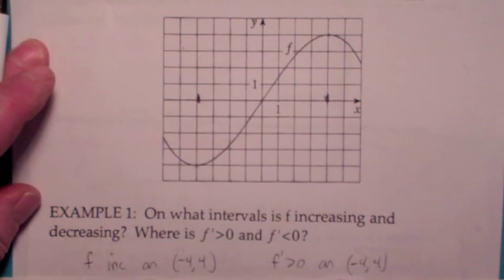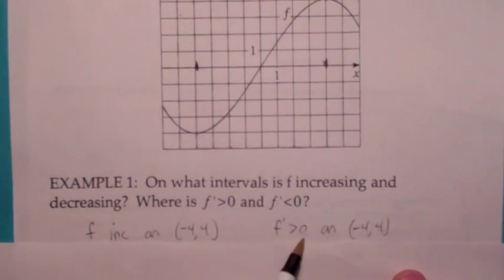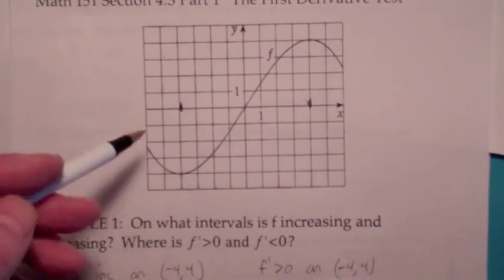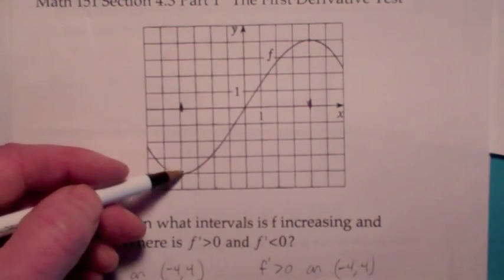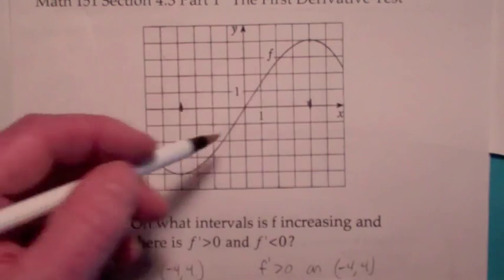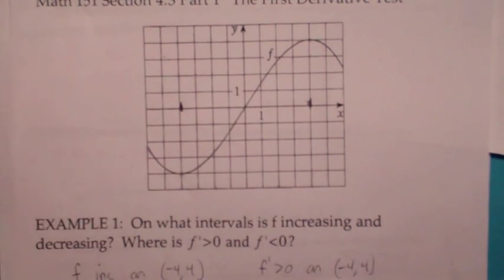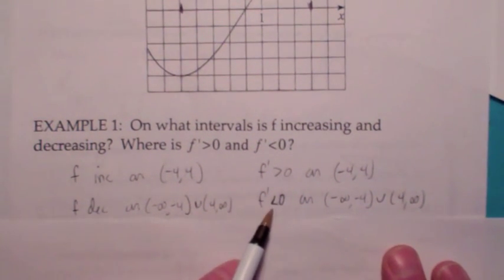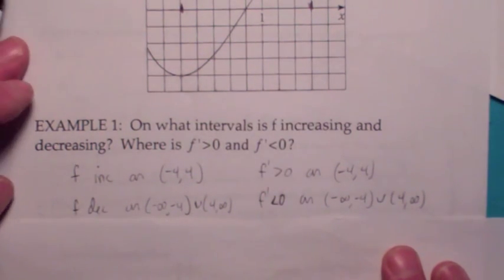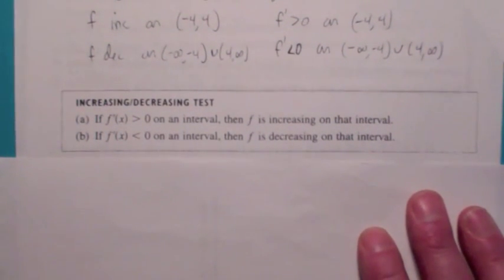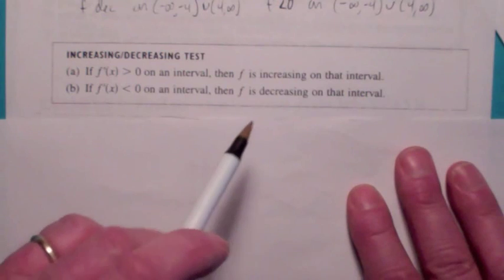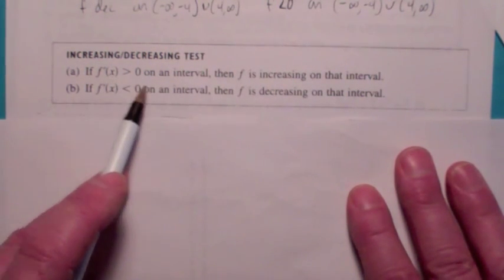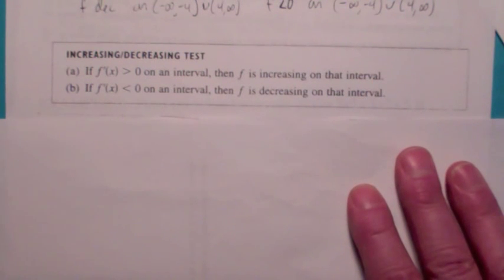So the answer is: f is increasing from negative 4 to 4, and f' is greater than 0 from negative 4 to 4. f is decreasing from negative infinity to negative 4 and from 4 to infinity, and the slopes of the tangent lines are less than 0 in those regions. So f' is less than 0 from negative infinity to negative 4 and from 4 to infinity. This is called the increasing-decreasing test: where the derivative is greater than 0, f is increasing; where the derivative is less than 0, f is decreasing.